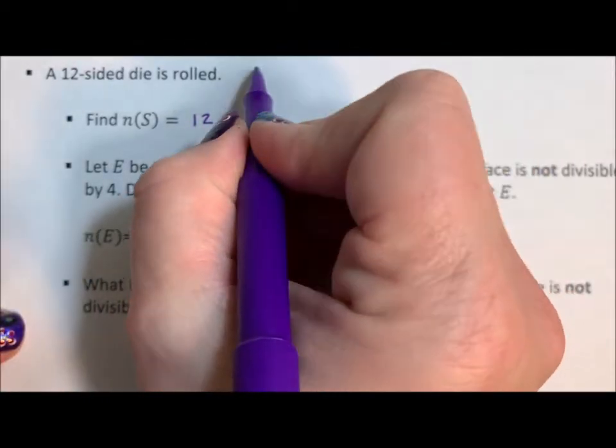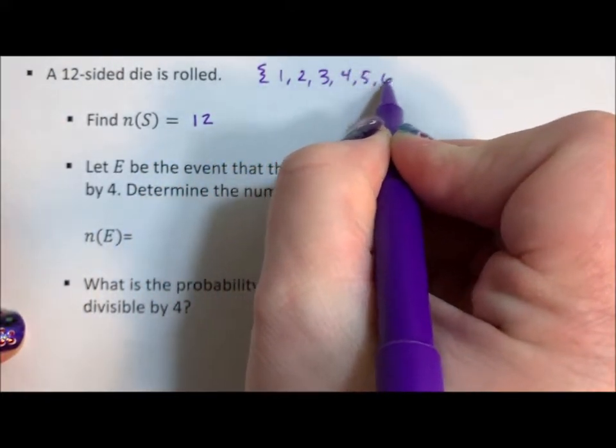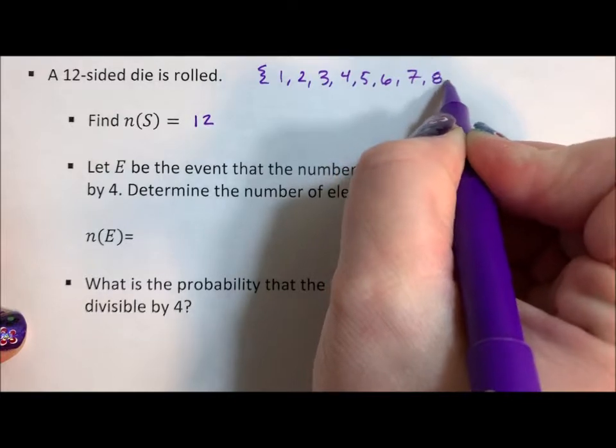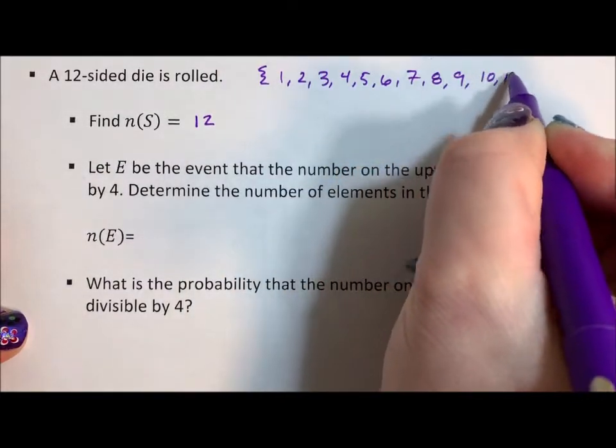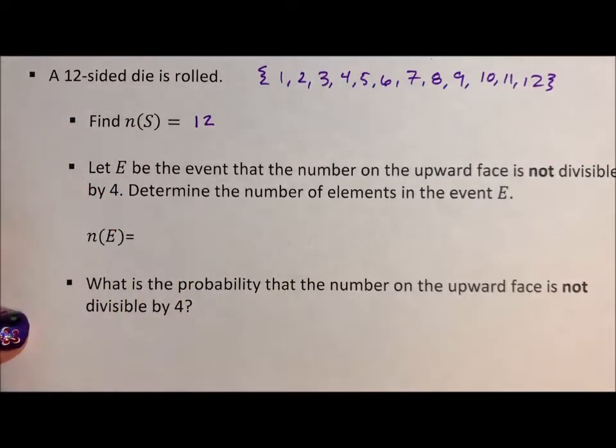If you don't believe me, the sample space is 1, 2, 3, 4, 5, 6, 7, 8, 9, 10, 11, 12, because it's each of the 12 sides of the 12-sided die.